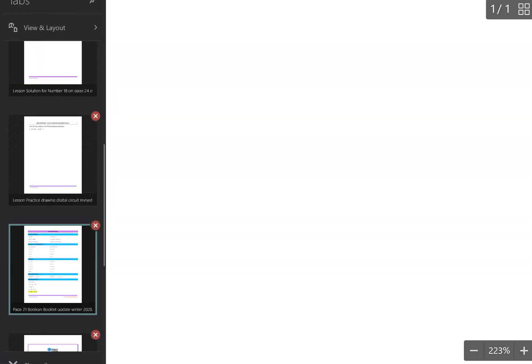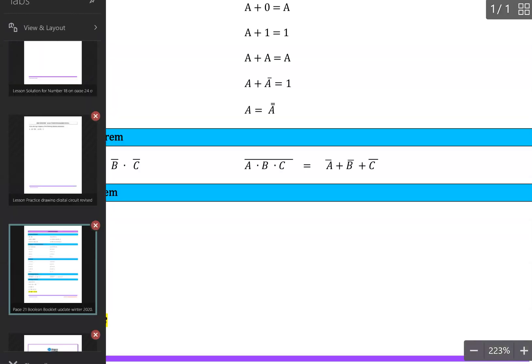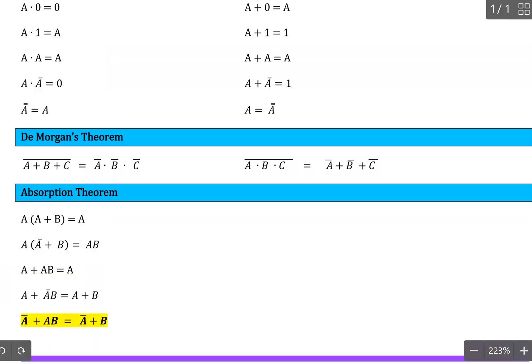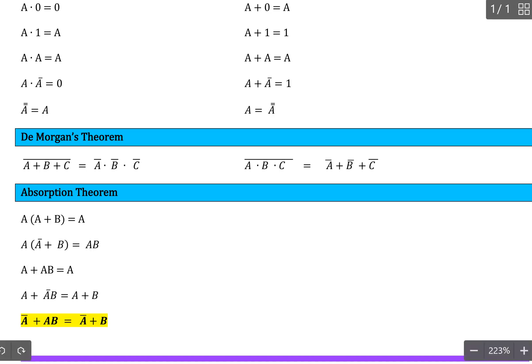Let's review De Morgan's theorem. On page 21, De Morgan's theorem says that if you break the bar, then you need to change the operation. So you change the AND to OR, or the OR to AND.